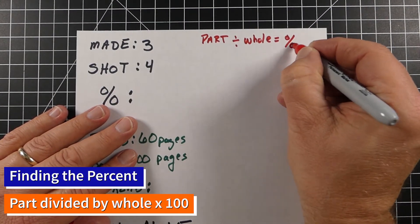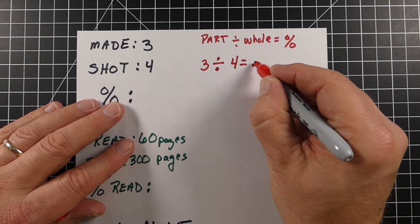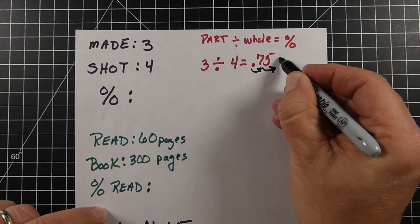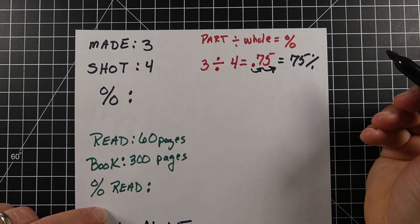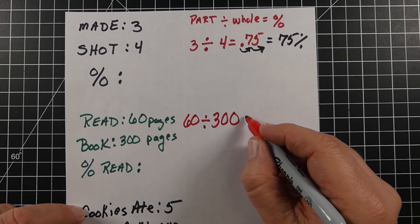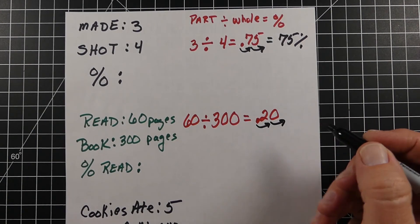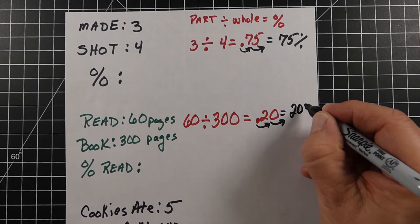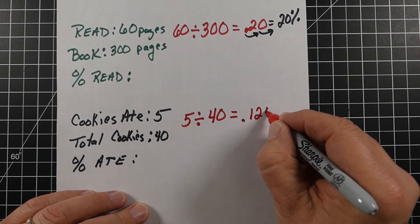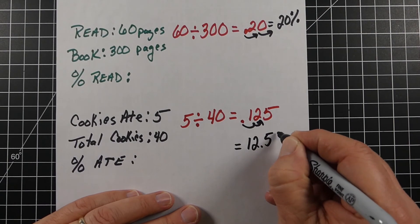To find the percent: take the part divided by the whole to get a decimal, then move the decimal two places to the right. For example, 3 divided by 4 is 0.75, which becomes 75%. Reading 60 of 300 pages: 60 divided by 300 is 0.2, which becomes 20%. Eating 5 of 40 cookies: 5 divided by 40 is 0.125, which becomes 12.5%.